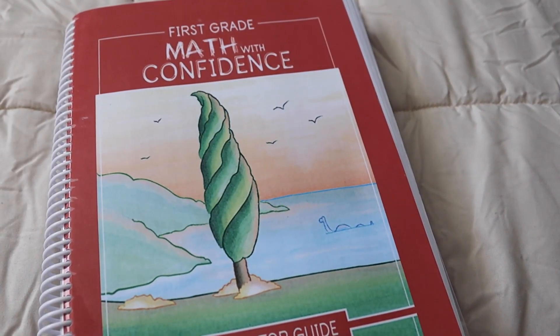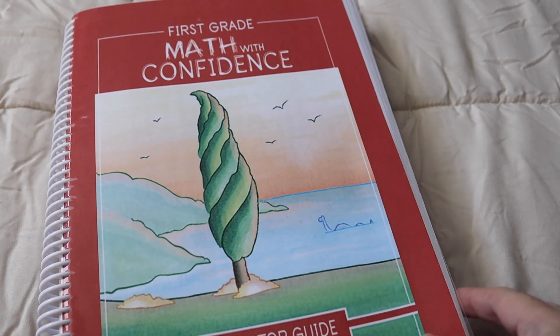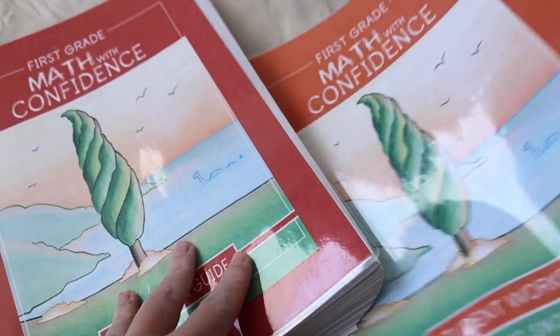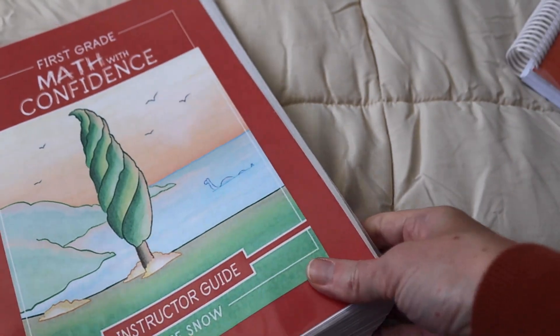So I'm going to turn the camera around, and I'm going to be showing you both the workbook and the teacher's manual. Here are our books for Math with Confidence. So the grades come with your instructor's guide, and it comes with the student book. So we're going to look at the instructor's guide first, and then we'll move on to the student book.